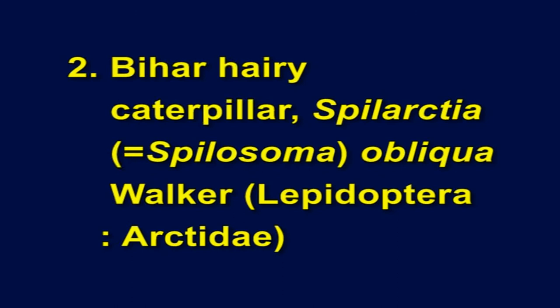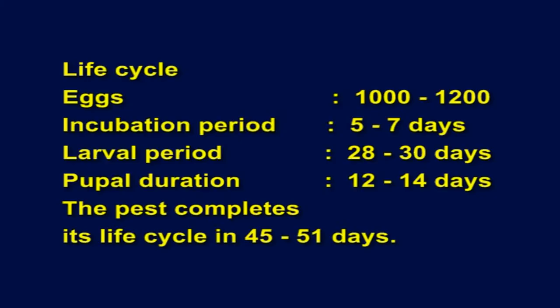Bihar hairy caterpillar, Spilosoma obliqua Walker, Lepidoptera, Arctiidae. Symptoms: Larvae on hatching are gregarious, congregating on the lower surface of leaves, scraping and feeding on green matter leaving only the veinal network. Grown-up larvae disperse and feed on entire leaves leaving the midrib and veins, with bare branches in severe attacks. Life cycle: A female lays about 1,200 eggs; incubation period lasts 5 to 7 days; larval period lasts 28 to 30 days; pupal duration is 12 to 14 days. The pest completes its life cycle in about 45 to 51 days.